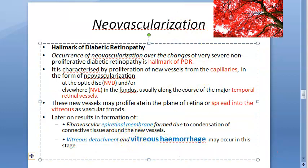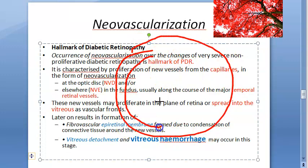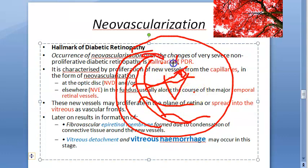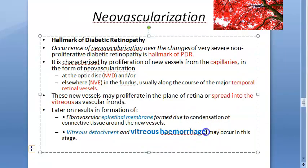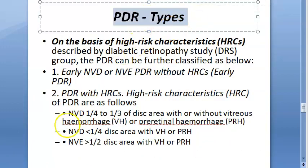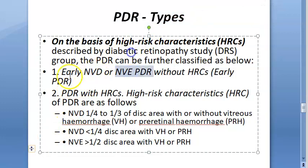Because of all this neovascularization, vitreous detachment can happen and, very importantly, vitreous hemorrhage can occur. If this is the eye — the retina on one side and vitreous on the other — the vascular fronds lead to a fibrovascular epiretinal membrane, vitreous detachment, and vitreous hemorrhage, ultimately causing vision loss.